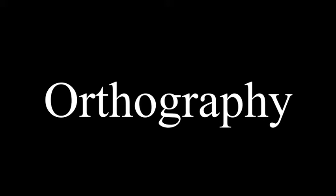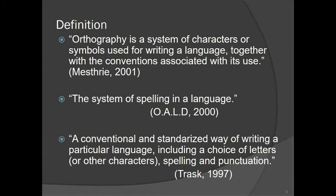Those signs were developed with the development of the culture and the languages of certain areas of the world. Today, to study the development of these signs of language used by human beings is called orthography. According to Oxford Advanced Learner's Dictionary, edition of 2000, the system of spellings in a language is called orthography. Orthography is a system of characters or symbols used for writing a language, together with the conventions associated with its use.